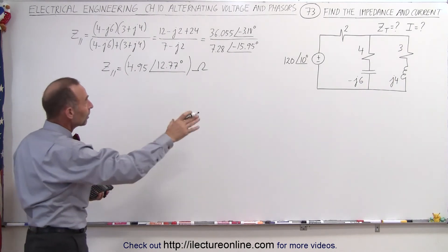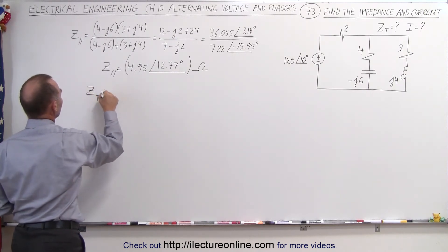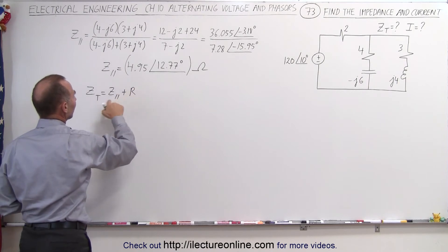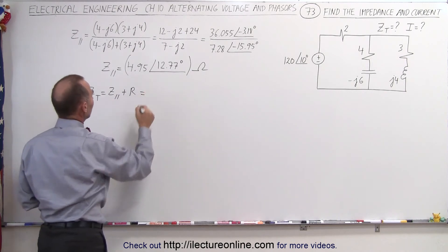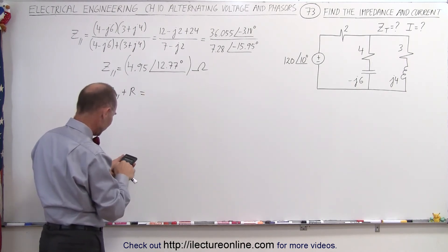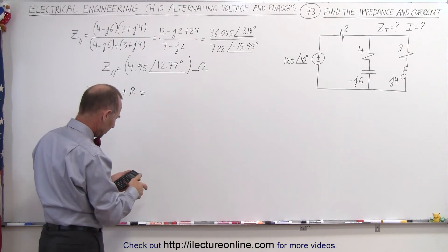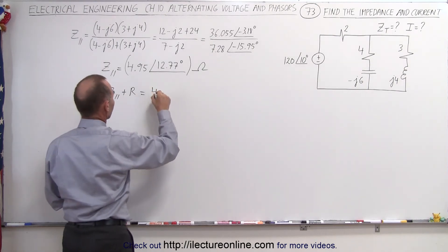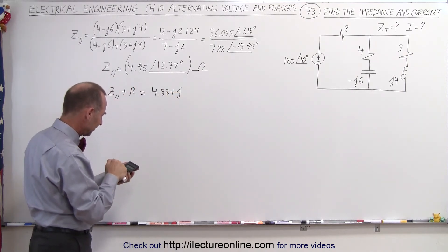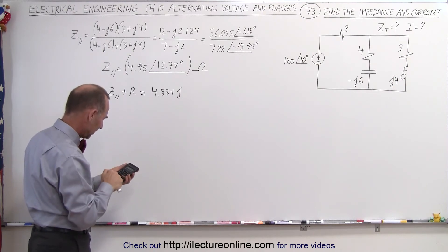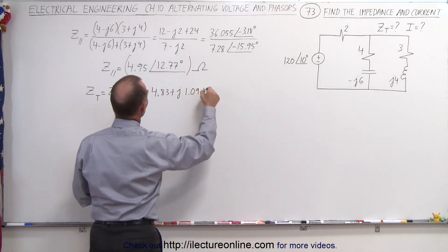Now we're ready to find the total impedance, which means adding the impedance of the parallel branch to the impedance of the resistor. Z total equals Z parallel plus the resistance. For that we have to reconvert back into the real and imaginary parts. So the real part is cosine of 12.77 times 4.95, which gives 4.83, plus J — the imaginary part uses sine of 12.77 times 4.95.